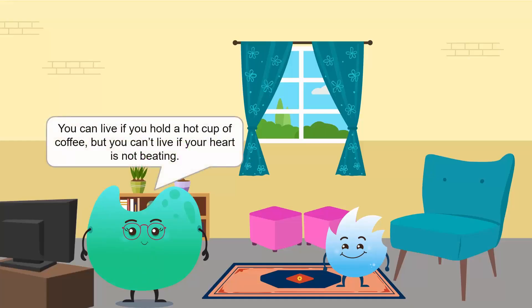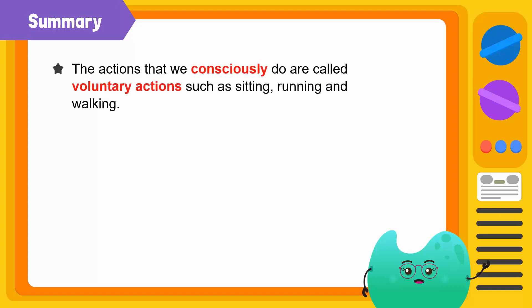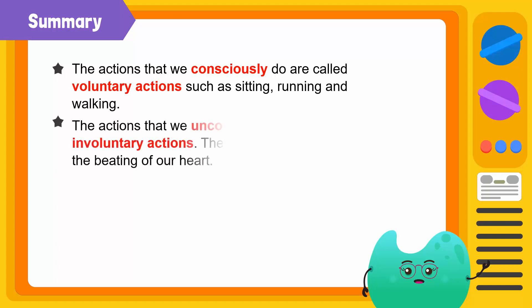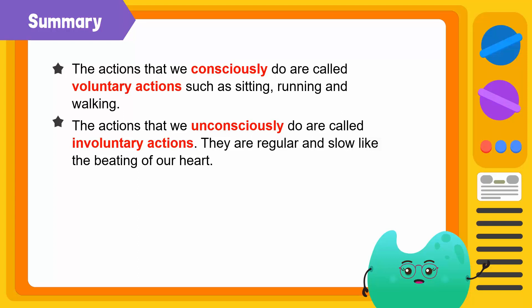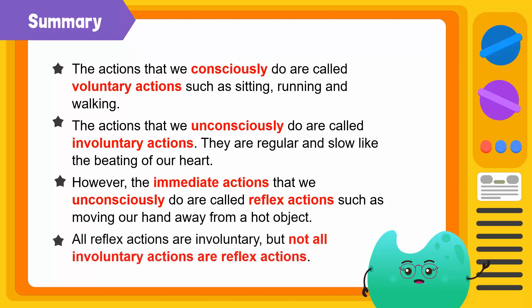You can live if you hold a hot cup of coffee, but you can't live if your heart is not beating. To summarize: the actions that we consciously do are called voluntary actions, such as sitting, running, and walking. The actions that we unconsciously do are called involuntary actions — they are regular and can be slow, like the beating of our heart. However, the immediate reactions that we unconsciously carry out are called reflex actions, such as moving our hand away from a hot object. All reflex actions are involuntary, but not all involuntary actions are reflex actions.